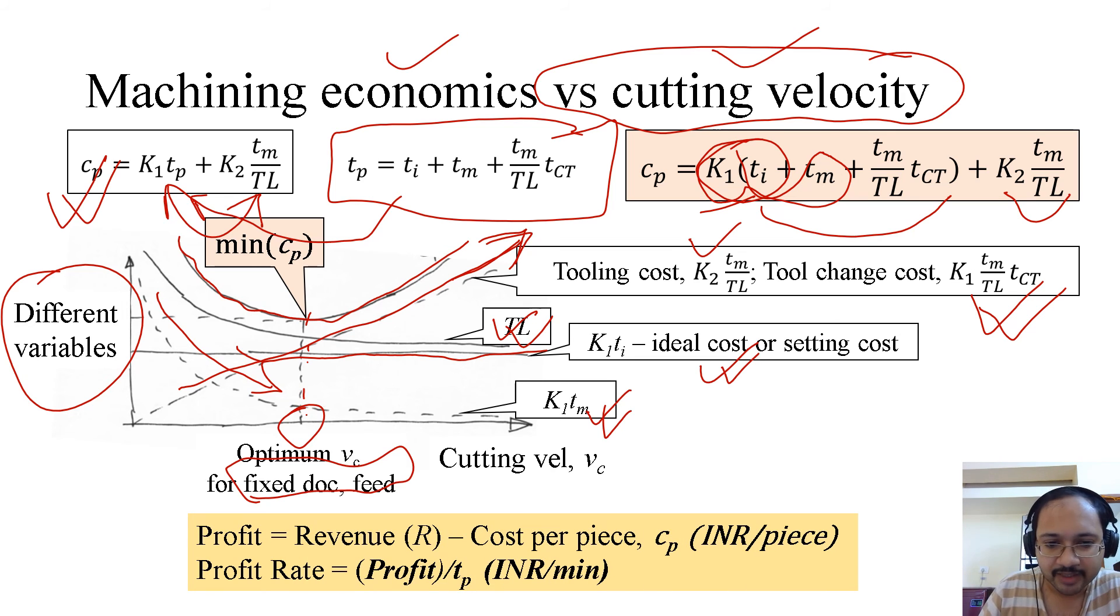Now so what is profit here? We know revenue. If we subtract the cost per piece, that is cp in INR per piece, from the revenue, we get the profit. If we divide this profit by time per piece, remember we are not dividing by machining time, we are dividing by time per piece. So if we divide by time per piece, we get the profit rate.